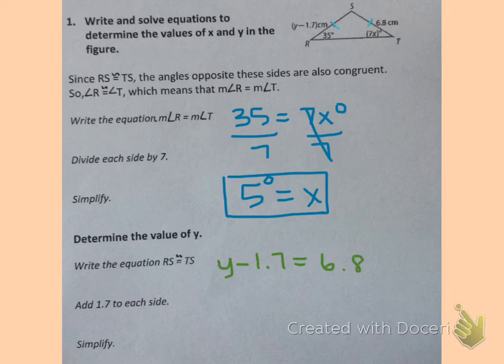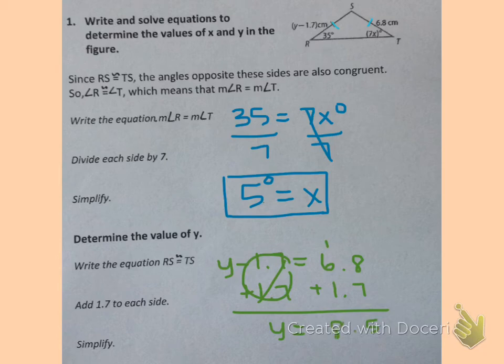And so again, we have an equation, and we know how to solve this. I'm going to add 1.7 to both sides, keeping it balanced. Minus 1.7 plus 1.7 cancels out. So we just have Y equals, and then 7 plus 8 is 15. Carry the 1, and that's 8, and we can't forget our decimal.